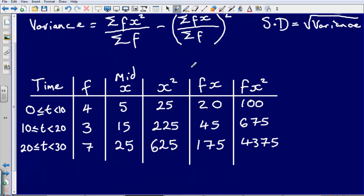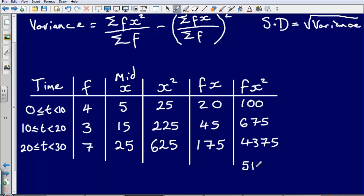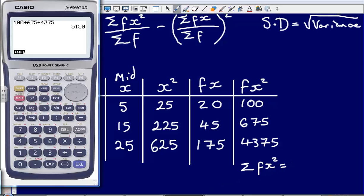So I need the sum of fx squared, so let's use our calculator to do this. The sum of fx squared, so that's going to be 100 plus 675 plus 4,375. So that gives me 5,150. So let's write this out nice and clearly. So I can say that the sum of fx squared was 5,150.